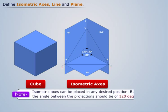Note that isometric axes can be placed in any desired position but the angle between the projections should be 120 degrees.